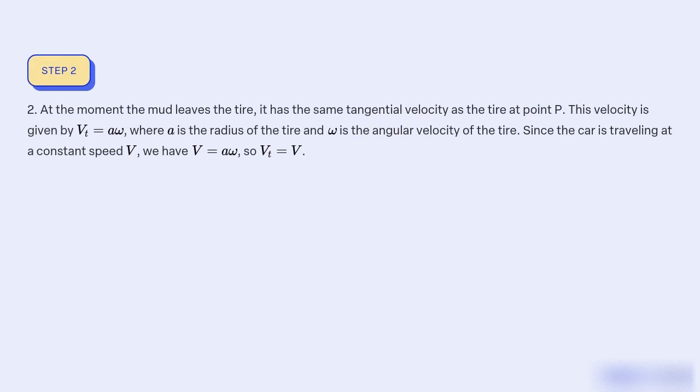2. At the moment the mud leaves the tyre, it has the same tangential velocity as the tyre at point P. This velocity is given by Vt equal to aω, where a is the radius of the tyre, and ω is the angular velocity of the tyre. Since the car is travelling at a constant speed V, we have V equal to aω, so Vt equal to V.